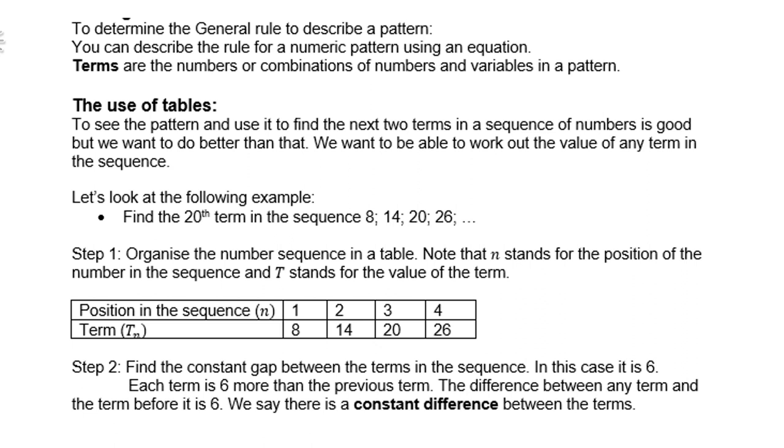Step 2: Find the constant gap between the terms in the sequence. In this case, it is 6, because 14 minus 8 is 6, 20 minus 14 is 6, 26 minus 20 is 6. So there is a constant difference between the terms.